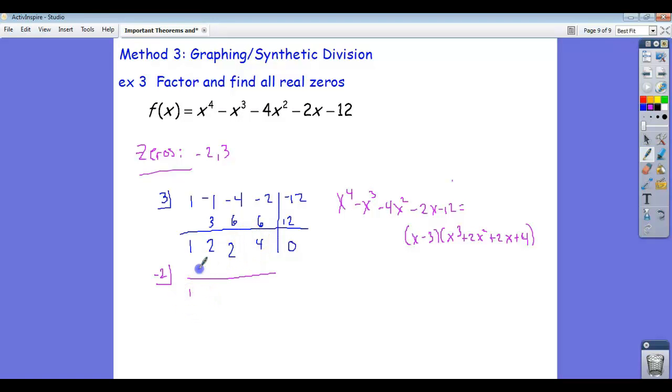Bring down the one, negative two, and I should get a zero here for the remainder. Zero, multiply, you get zero, you get a two, multiply, you get a negative four, and of course we get zero.